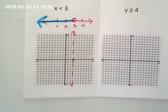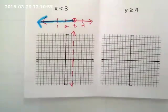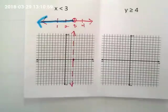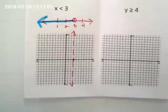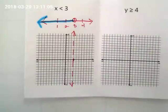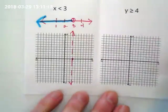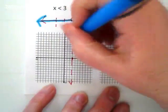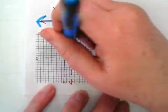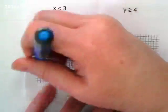Where are we shading? We do shade. Everything left, because x is less than three, right? X is less than three, that means that everything on the x-axis that's less than three gets shaded.